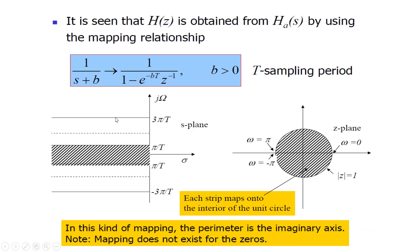In the impulse invariant technique, we were able to obtain strips. For example, the first strip from minus pi/T to plus pi/T, then minus 3*pi/T to minus pi/T, and so on. Every strip, for example from minus pi/T to plus pi/T, would go into the unit circle, the next strip would also go into the unit circle, and so on. Because of this there was a problem of aliasing, as each strip maps onto the interior of the unit circle.